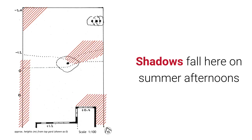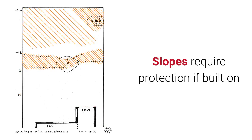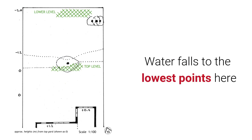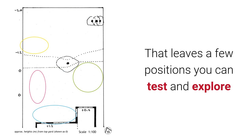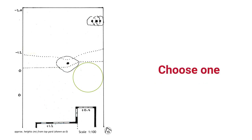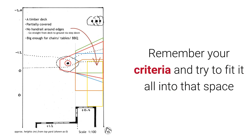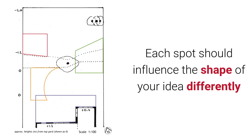Your shadows will fall here on a summer afternoon — that's the time of year you will use it mostly, so you don't want to build in these particular areas. Slopes are in these areas of the site and they require protection if you build a deck on them — you will have to use a handrail around the edges, so you don't want to build there. Strong winds can come from the north during summer, and that would obviously be a bad place to build. Water falls to the lowest points at the top and at the bottom edge of the site, so you don't want to build here or you need to account for that. That does leave a few positions that you can test and explore — choose one. Explore how that position can influence the shape of the area, remember your criteria, and try to fit it all into that space. Each spot should influence the shape of your idea a little bit differently.